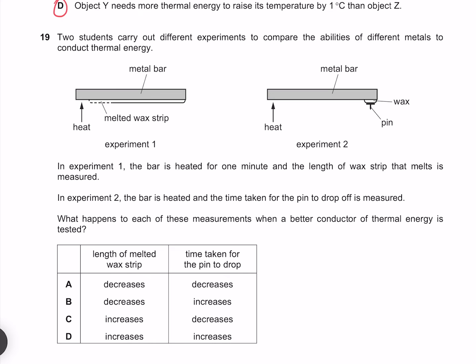Two students carry out different experiments to compare the abilities of different metals to conduct thermal energy. In experiment one the bar is heated for one minute, and the length of wax strip that melts is measured. In experiment two the bar is heated, and the time taken for the pin to drop is measured. What happens to each of these measurements when a better conductor of thermal energy is tested? Using a better conductor means our temperature is going to raise quicker, meaning we're going to see an increase in the length of melted wax strip and a decrease in the amount of time taken for the pin to drop. So our answer must be C.